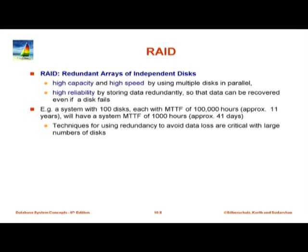RAID stands for Redundant Array of Independent Disks — originally it stood for Redundant Array of Inexpensive Disks. The idea is to use cheap disks rather than expensive reliable disks, and get reliability through redundancy. There are two parts: high reliability by storing data redundantly — multiple copies or other means — and high capacity by using multiple disks in parallel. If you want to store data at gigabytes per second, a single hard disk at 100 megabytes per second is not going to keep up, so you have multiple disks working in parallel.